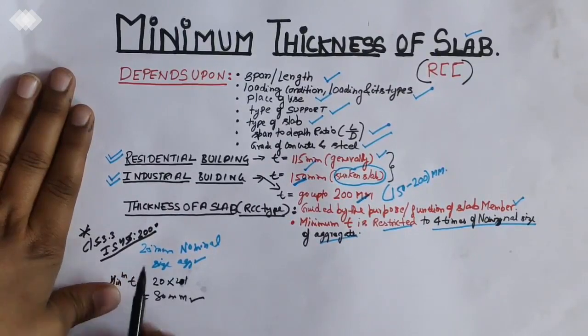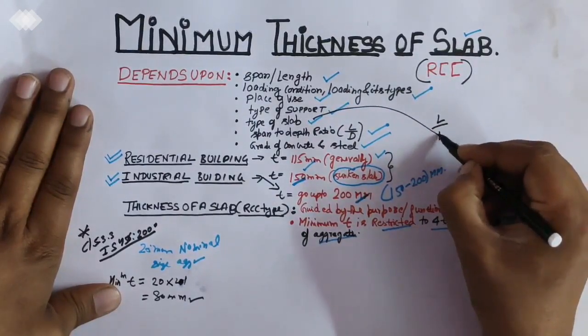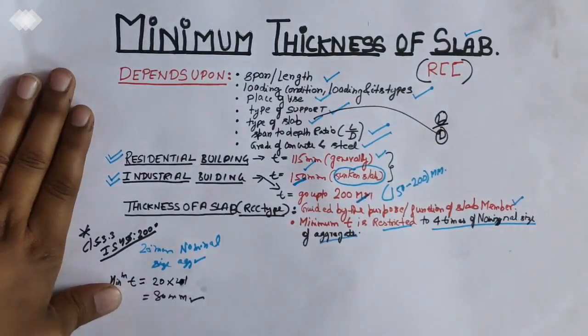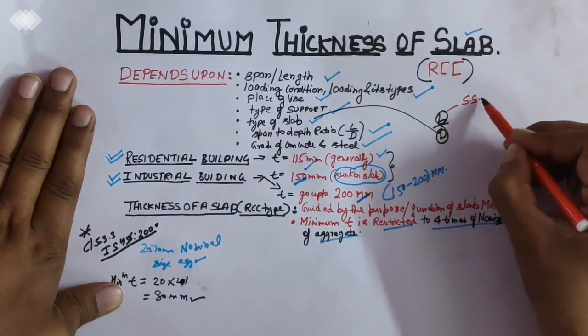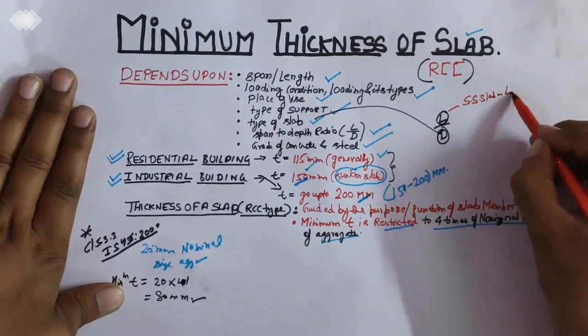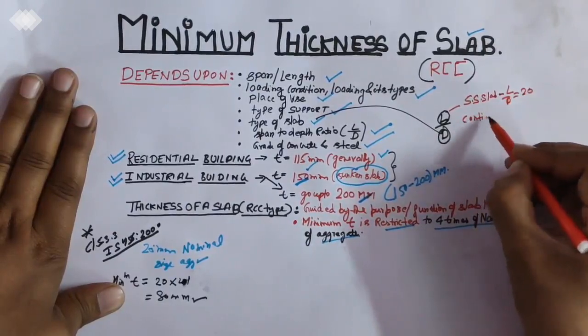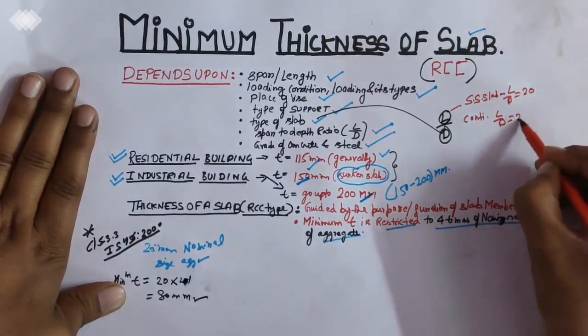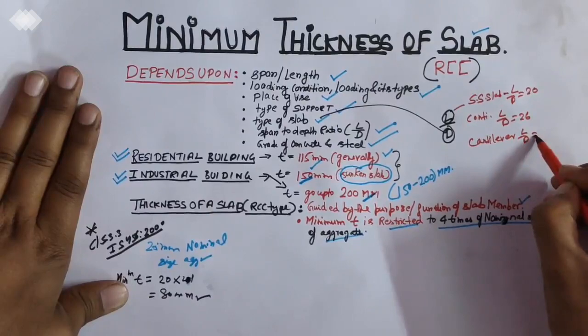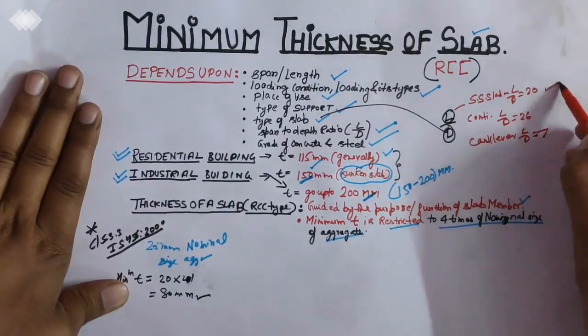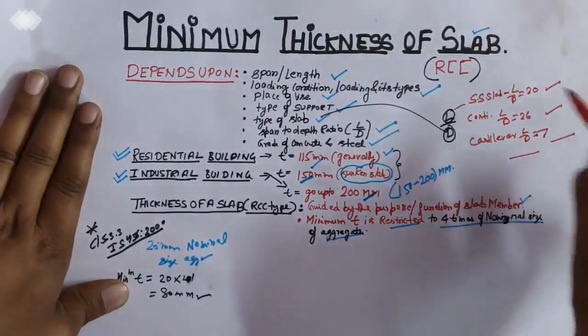If you consider different types of slab, we have to consider L by D ratio. And this ratio changes. For simply supported slab, L by D is 20. For continuous slab, L by D is 26. And for cantilever, L by D is 7. So if you consider different types of slabs, L by D span to depth ratio changes. This is an important factor in deciding minimum thickness.